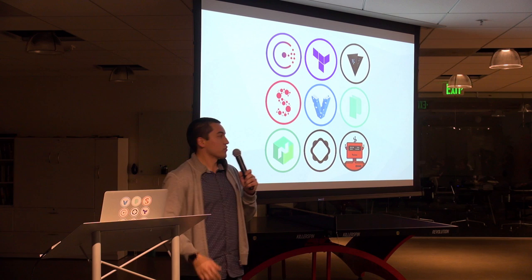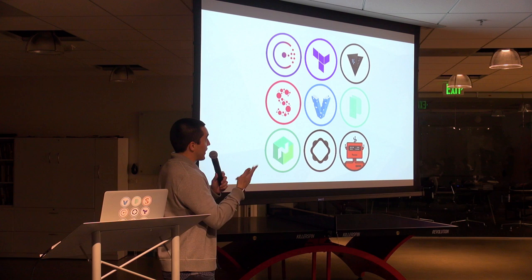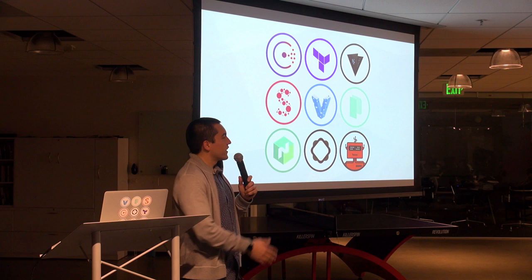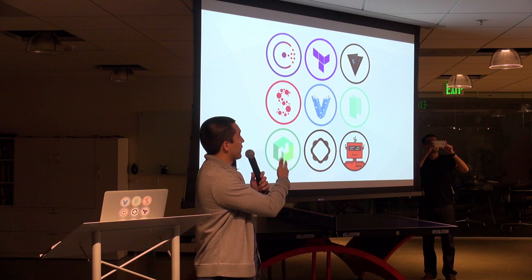These are all the things we make: Vagrant, Packer, Surf, Consul, Terraform, Vault, Nomad, Otto, and Atlas. You might have used one or more of these. All of them except Atlas are open source projects with fairly large communities. What they do ranges from purely developer tools like Vagrant, to more operator IT tools like Consul or Packer, to very security-oriented tools like Vault.